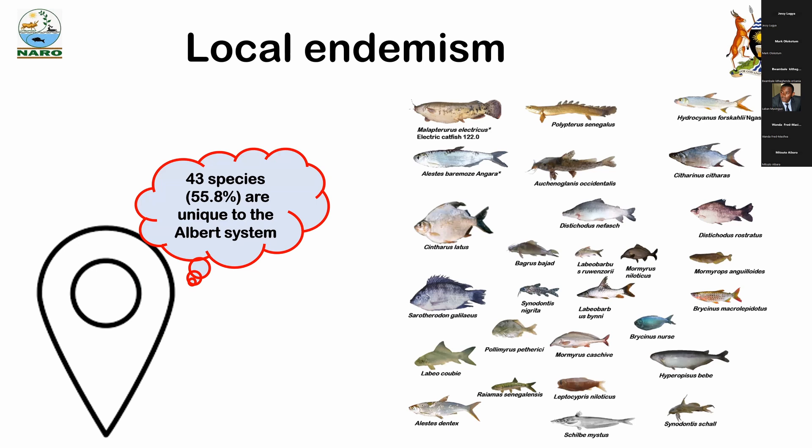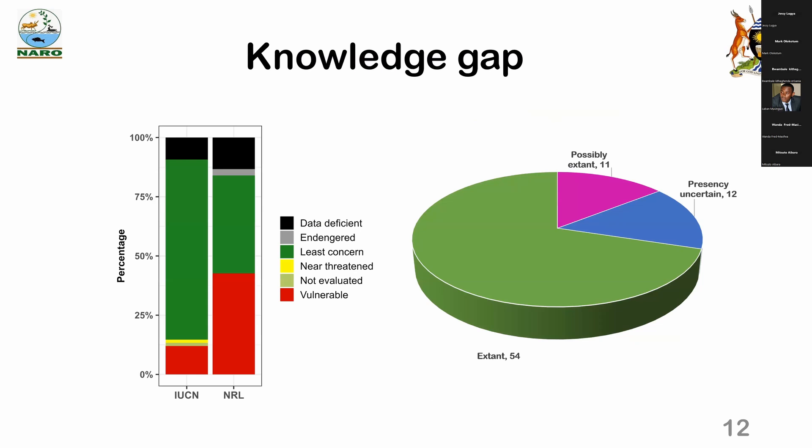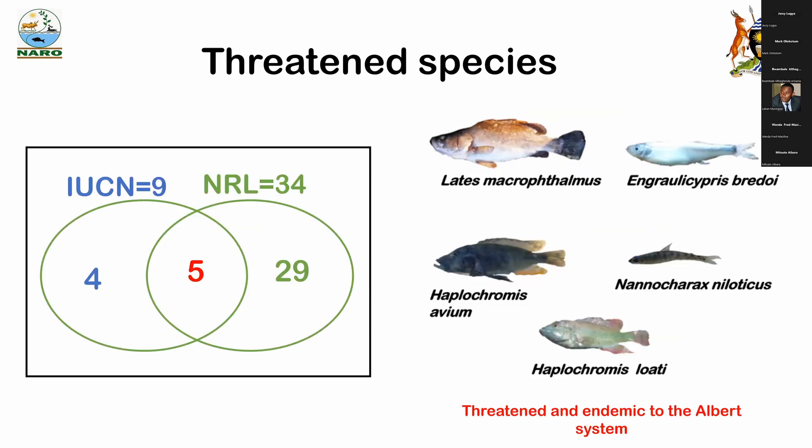The system also reports nine fish species which are threatened according to the global red list, and 34 fish species which are threatened according to the national red list. Five fish species are threatened at both the national and the global level, and those are displayed on the screen.